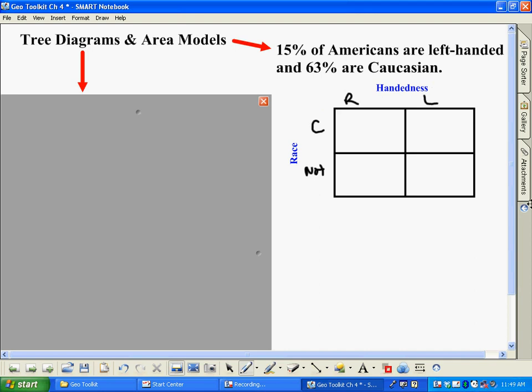Also, we can figure out probabilities from this. Our right-handed, well 15% are left-handed, so I'm going to go ahead and put 0.15 right here. So what percent would have to be right-handed? Well, 100 minus 15 is 85, so that would be 0.85 if we write it as a decimal. So these two numbers here should have to be one.